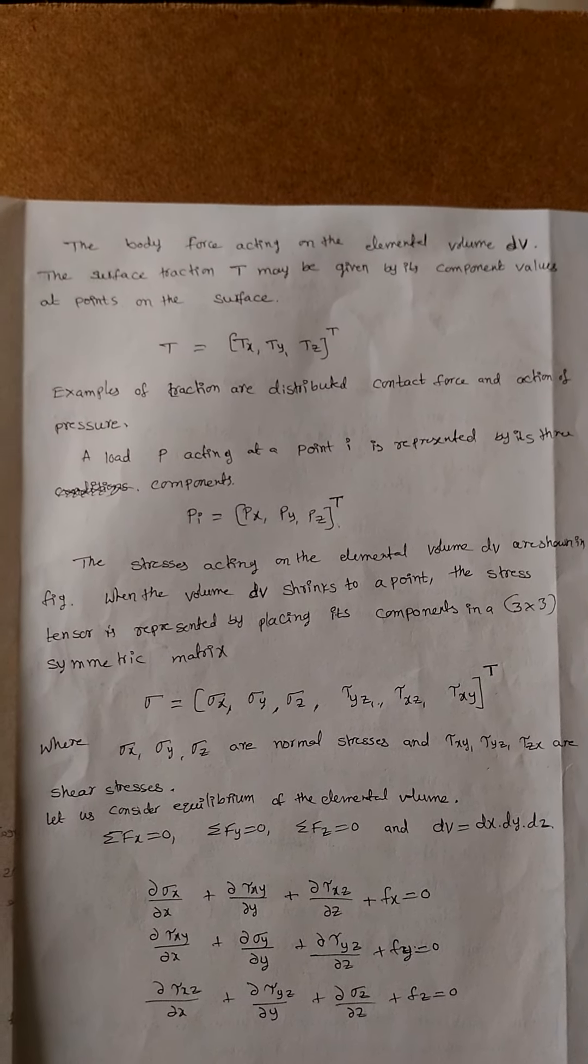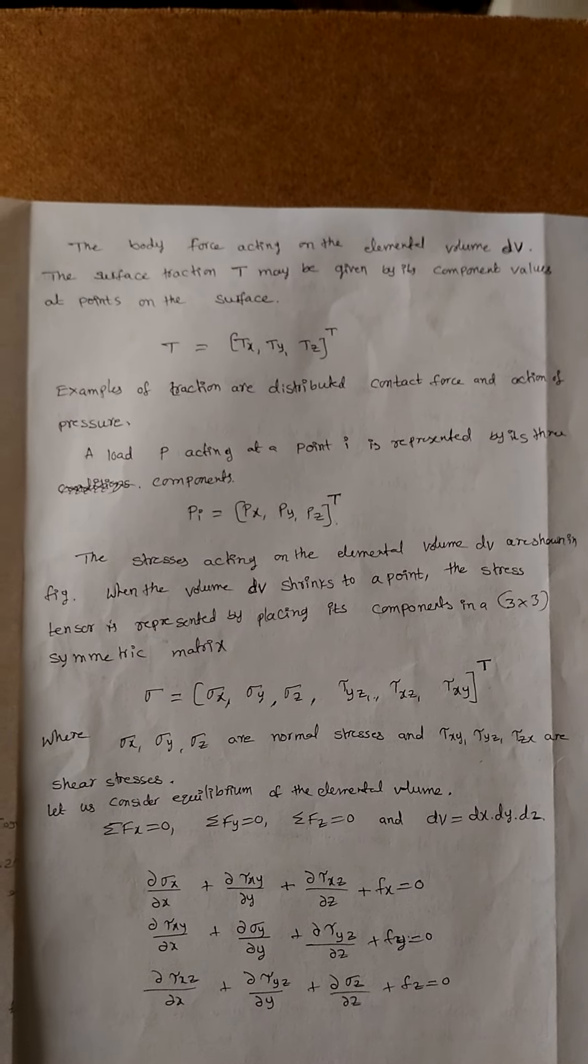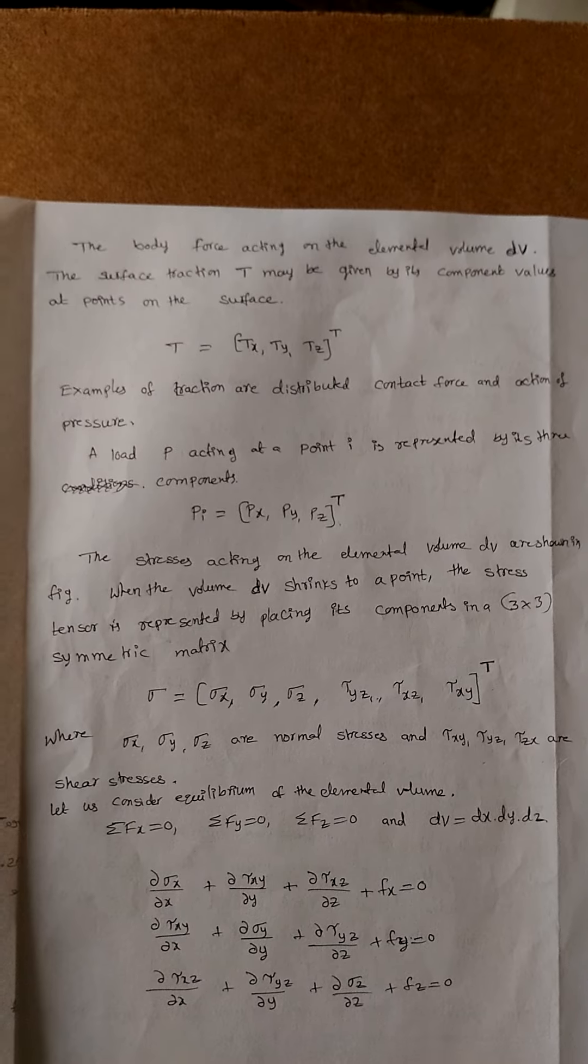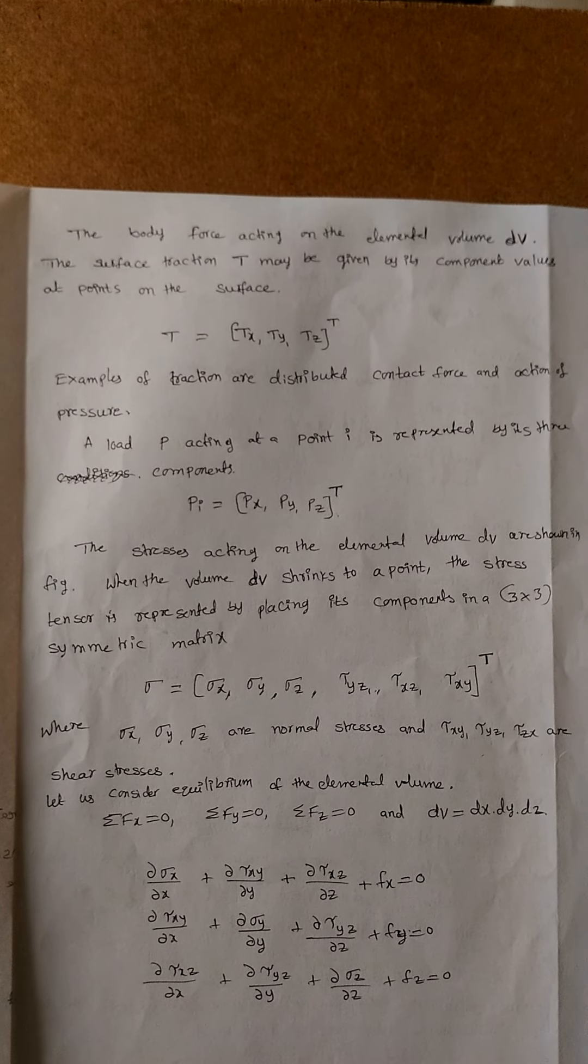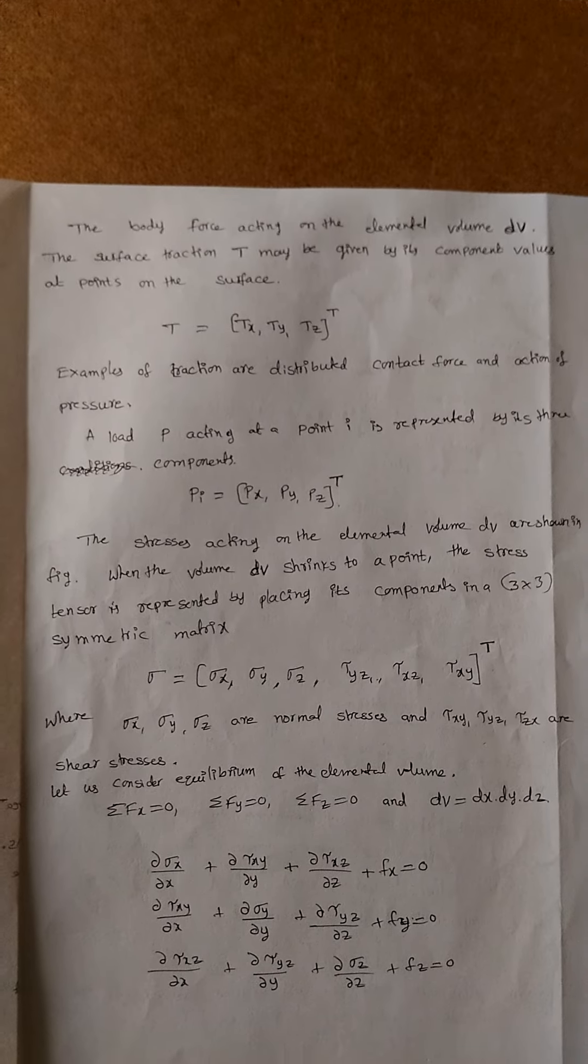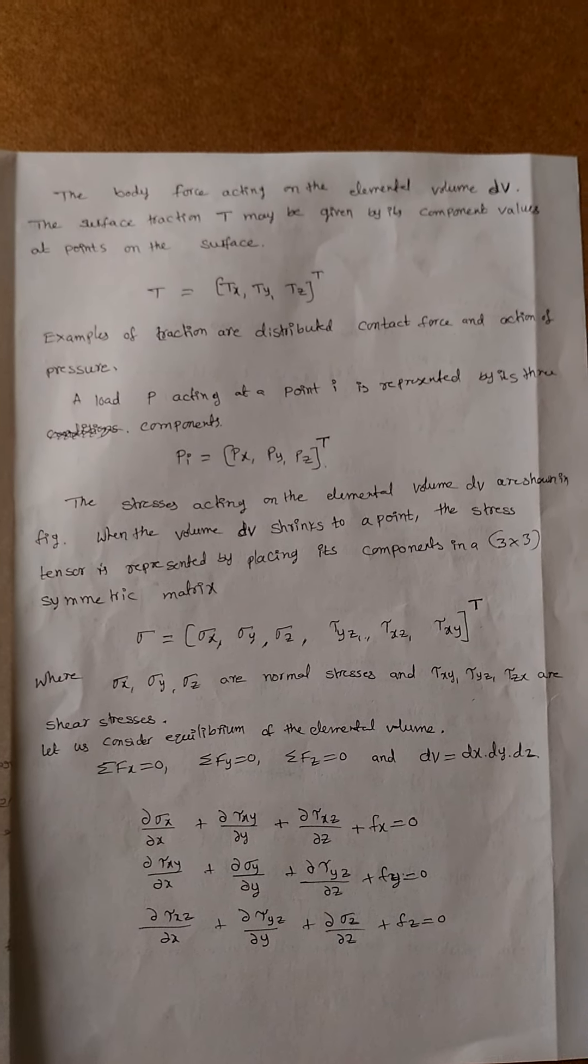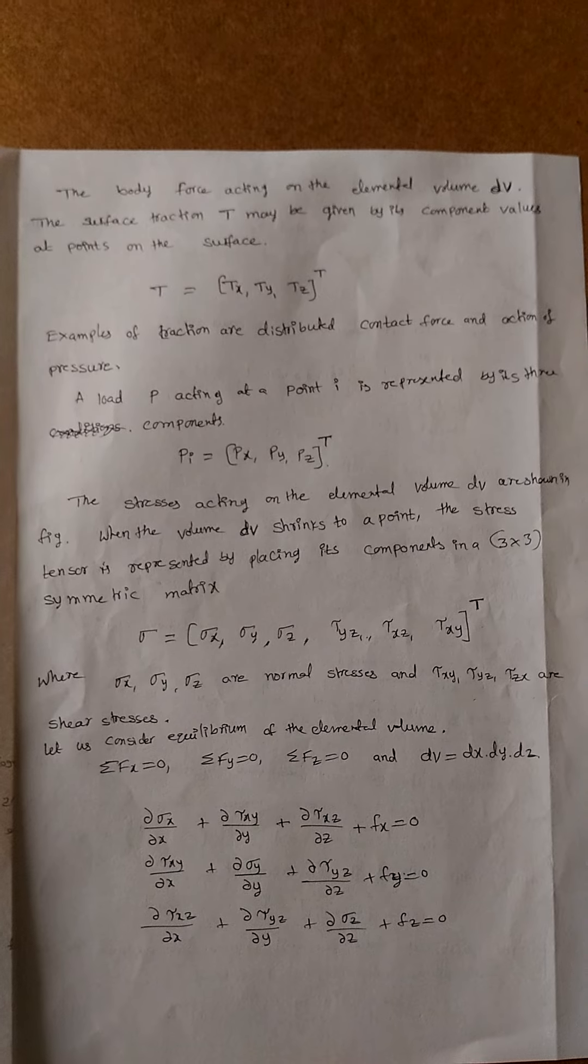It is represented by three components: P_i = (P_x, P_y, P_z)^T. The stresses acting on the elemental volume dv are shown in the figure. When the volume dv shrinks to a point, the stress tensor is represented by placing the vector components in a three-by-three symmetric matrix.